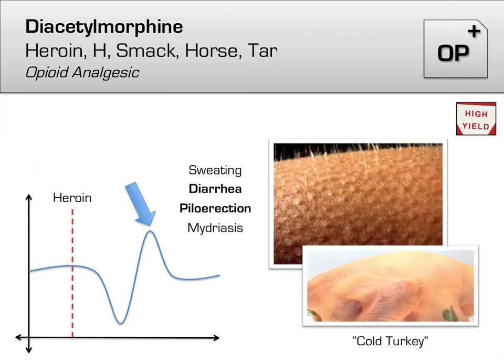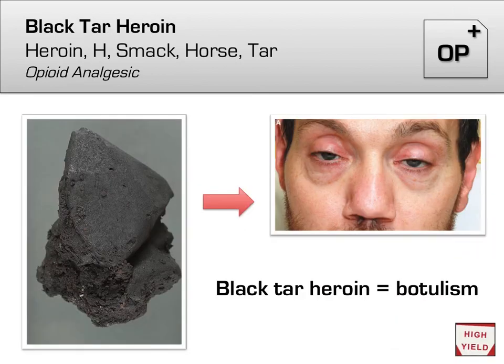In terms of withdrawal, heroin is your classic cold turkey situation. Piloerection, as pictured here, is fairly specific for heroin withdrawal in the context of drug use. Two other famous side effects — diarrhea and dilated pupils — should make sense, as they are the opposite of the constipation and pupillary constriction seen in heroin intoxication. A quick note for boards: black tar heroin, a form of cheaply produced heroin traded by Mexican cartels, has an association with botulism that you should know. Just think: black tar heroin equals botulism.